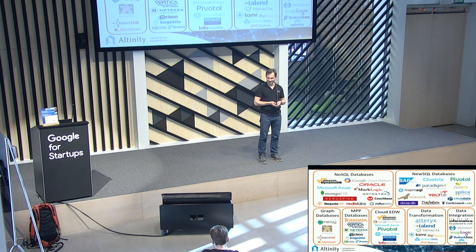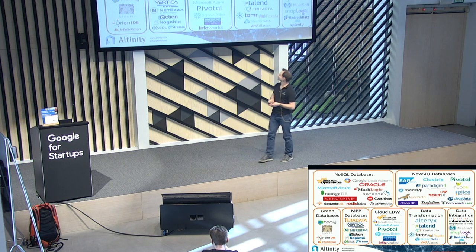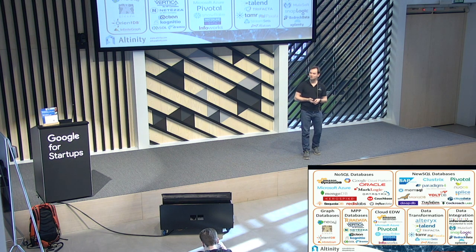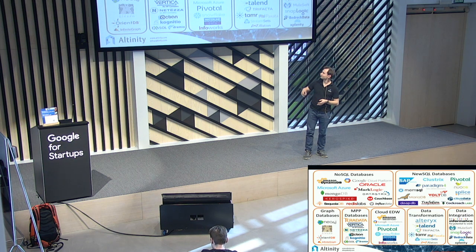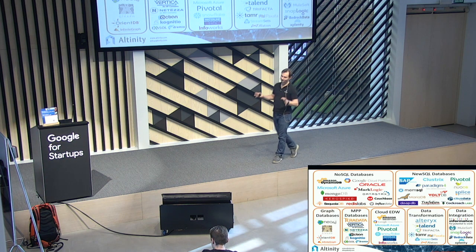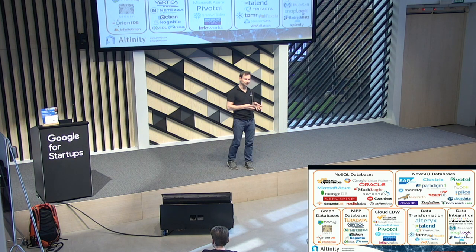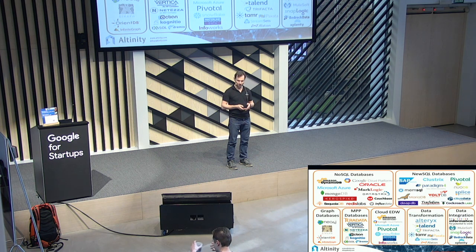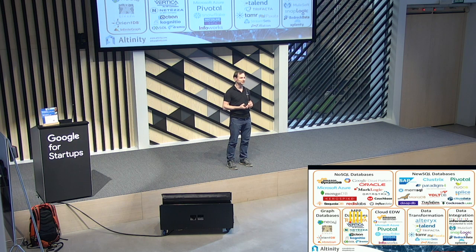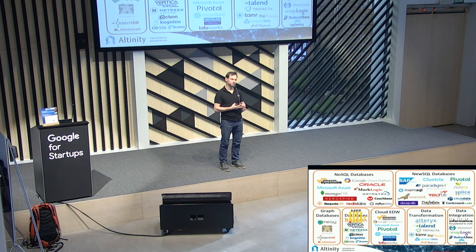So what is ClickHouse? This is one of many maps that some people try to plot in order to put different technologies into some spaces and compare them to each other. ClickHouse here stands in the box together with databases like Vertica, TeraData, and stuff. So it's a massive parallel processing database — an MPP database. It's a real database. It's not like NoSQL, not like Hadoop.